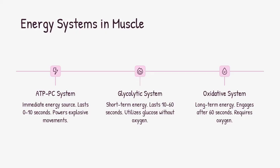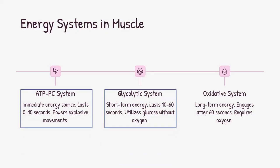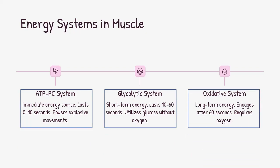Now let's talk fuel. Muscles rely on three energy systems. For quick bursts, there's the ATP-PC system — think sprinting. Next is glycolysis, which kicks in for moderate effort, breaking down glucose anaerobically. For long-duration tasks like jogging, the oxidative system takes over, burning oxygen efficiently to sustain activity.